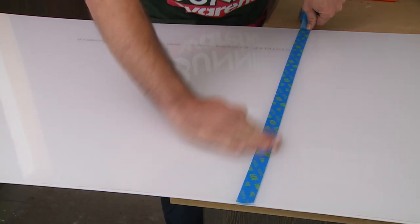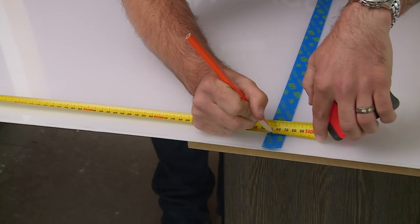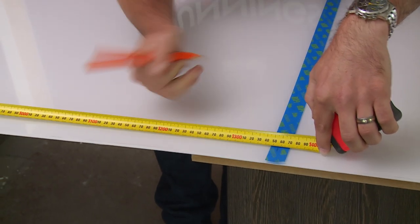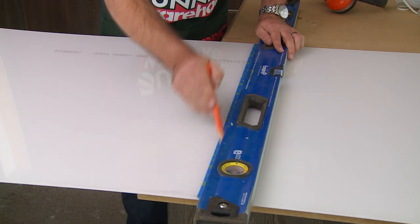What I'm going to do now is put masking tape on where I have to cut. We've used the masking tape on the splashback to stop it chipping when you're making the cut. Now I'm going to mark out on the masking tape where the cut goes.